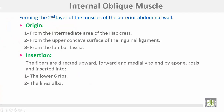The internal oblique muscle is the second layer of the muscles of the anterior abdominal wall. It takes origin from the intermediate area of the iliac crest, from the upper concave surface of the inguinal ligament, and from the lumbar fascia. It is inserted into the lower six ribs and into the linea alba. The fibers are directed upwards, forwards, and medially, ending by aponeurosis.